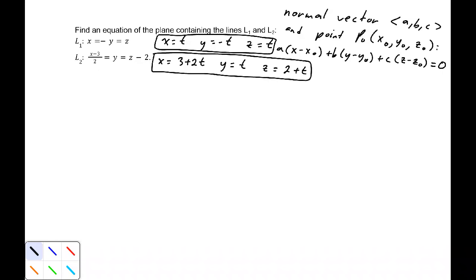If t equals 0, then I have the point (0, 0, 0). So P₀ is going to be (0, 0, 0). At least, that's what I'm going to use. You could use any point that's on this.